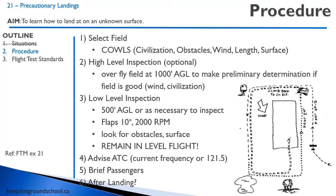So we're looking down — that looks like a good field. Are there people nearby that can help us if we need that? Are there obstacles? What's the wind like? Is the runway or that landing surface long enough? And what's the surface like — is it rough?